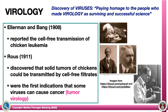In 1908, Ellermann and Bang reported the cell-free transmission of chicken leukemia, which is attributed to viruses. And by 1911, Rous discovered that solid tumors of chickens could be transmitted by cell-free filtrates. These were the first indications that some viruses can cause cancer — the birth of tumor virology as a sub-discipline of virology.